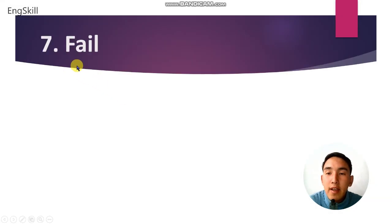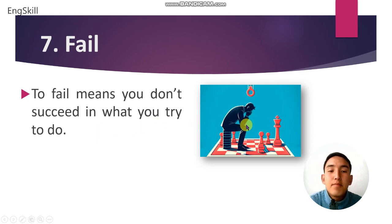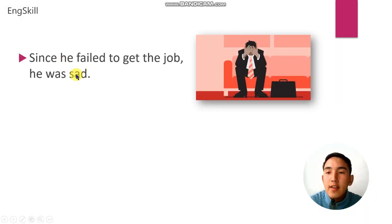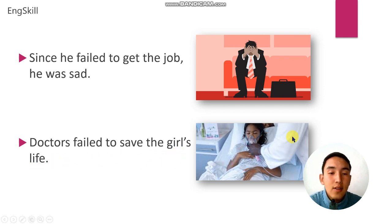Word number 7 is fail. To fail means you don't succeed in what you try to do. This person failed in playing chess. For example: since he failed to get the job, he was sad. Example number 2: doctors failed to save the girl's life.